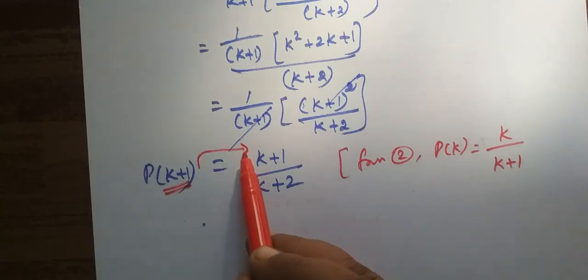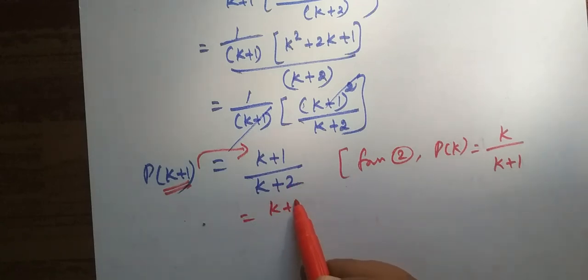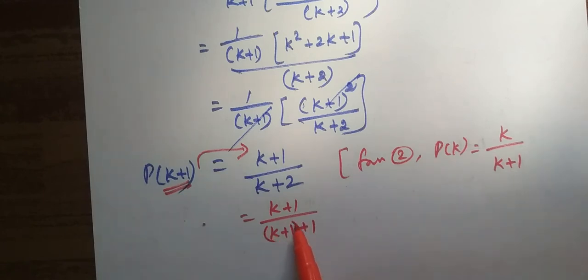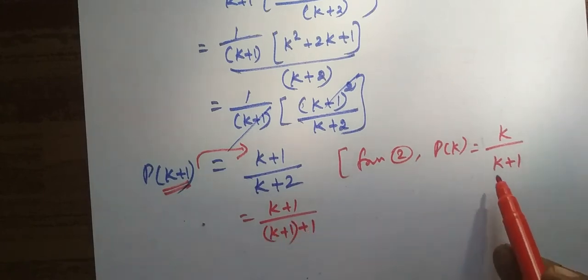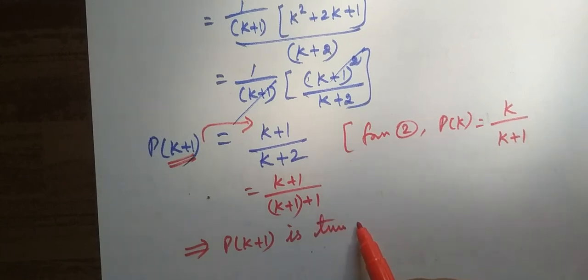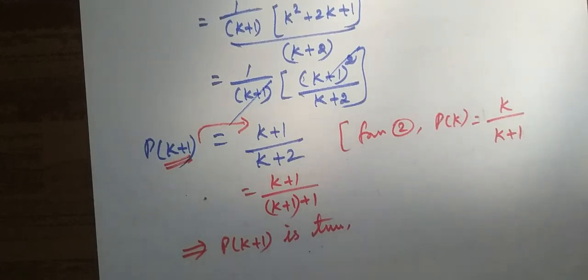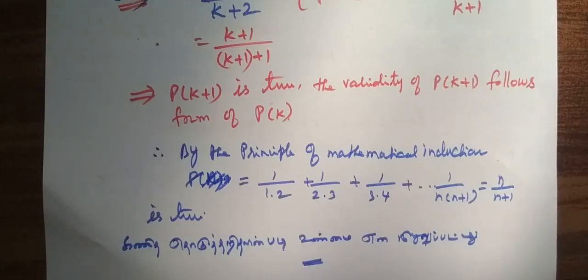Here is K plus 2. You can find the value. Which implies P(k+1) is true. What steps are we going to use? From step 2, the validity follows. The last step is to finish this proof. Finally, this step is complete.